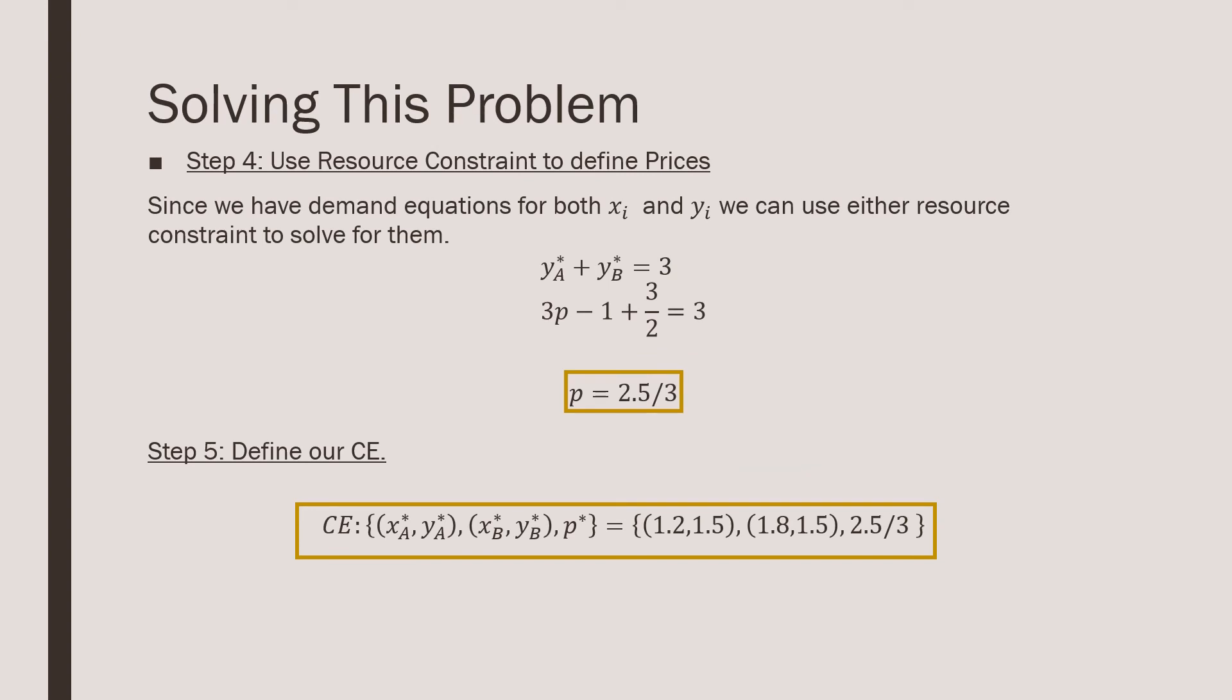Step number four is that we're going to use the resource constraint to define prices. So you can either use the resource constraint for X and the resource constraint for Y. In this case, I'm just going to use the resource constraint for Y. Just change things up a little bit. And we find by just plugging in our Marshallian demands, we derive this price here where P is equal to 2.5 over 3.